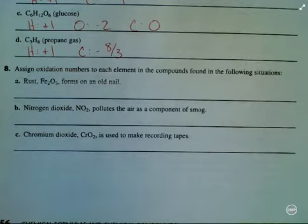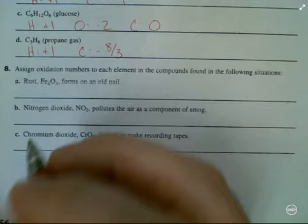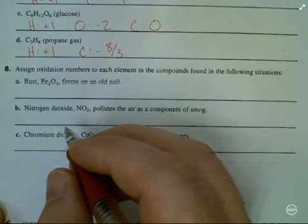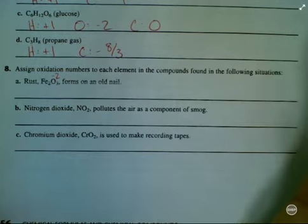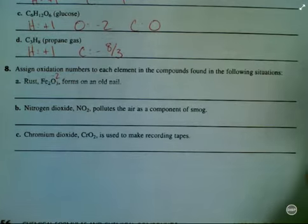Rust. Fe2O3 forms on an old nail. So again, this is the common form of oxygen because it's not a peroxide, it's not with fluorine, so it's going to be minus two.